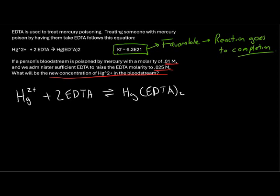Based on this, we'll write our initial molarity. For Hg2+, it's 0.01. For EDTA, it's 0.025. We start with no complex, but we can assume that one of these two compounds will run out.